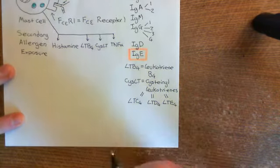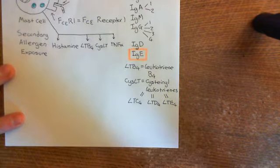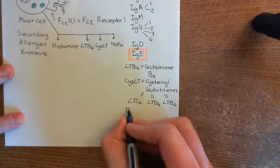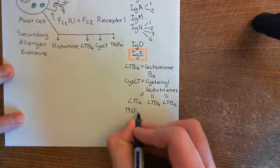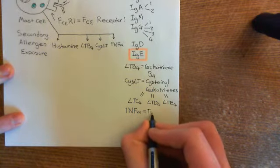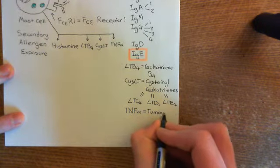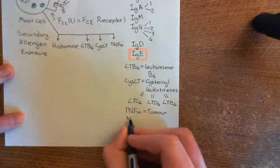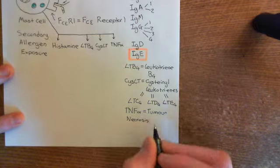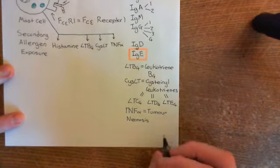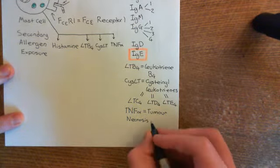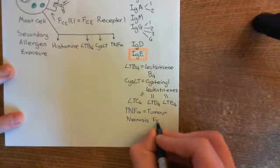TNF-alpha stands for tumor necrosis factor alpha. This is a protein molecule that has to be synthesized from the gene within the mast cells when the mast cell is activated, making it the pro-inflammatory mediator that takes the longest to be released.